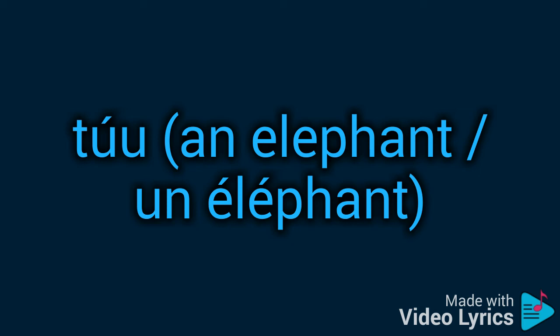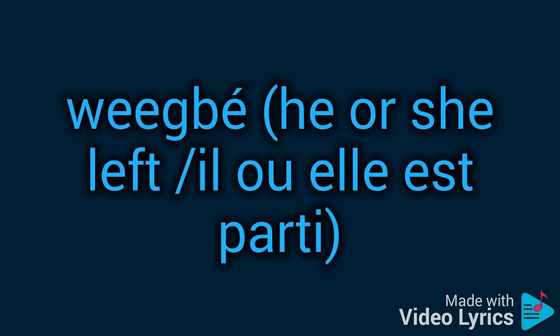Now we have the word 'to', 'to'. You can see there are two vowels and the tone is on the first one — 'to'. If it were on the second one we would say 'to', but since the tone is on the first one, we say 'to', which means 'an elephant' in English and 'un éléphant' in French.